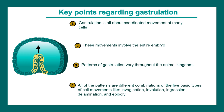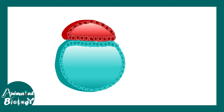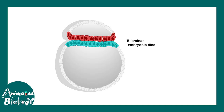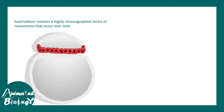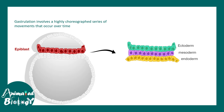There could be a combination of, say, invagination, ingression, and epiboly together — just to give one example. Not all possible movements happen together; a specific combination takes place for a given organism. Here is the human embryo. We can see the epiblast and the hypoblast. The cavity inside the epiblast is the amniotic cavity, and here we can see the yolk sac. The bilaminar embryonic disc comprises the epiblast and hypoblast layers. Gastrulation involves highly choreographed movement of epiblast cells, which eventually give rise to three lineages: ectoderm, mesoderm, and endoderm.